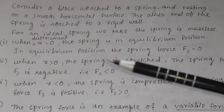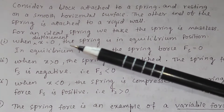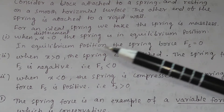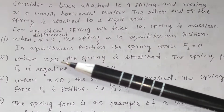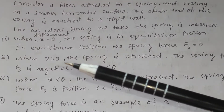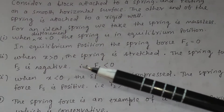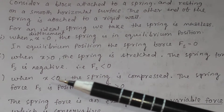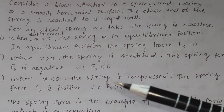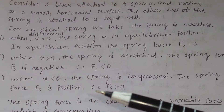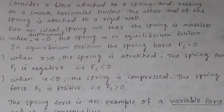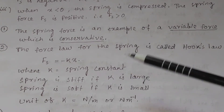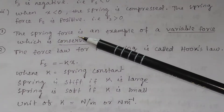Remember these three conditions of the spring: when displacement x equals 0, the spring is in equilibrium. When x is greater than 0, the spring force fs is negative. And when x is less than 0 — that is, the spring is compressed — the spring force fs is positive, that is fs > 0.